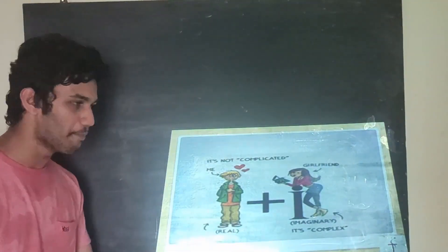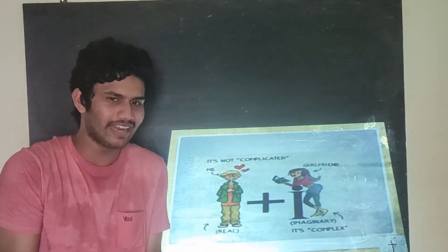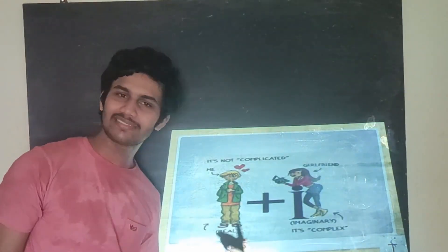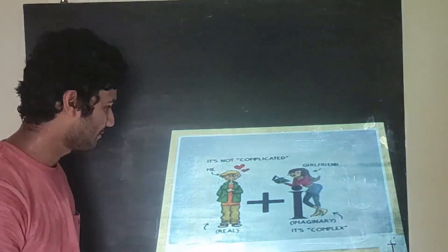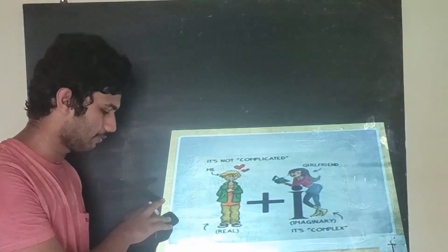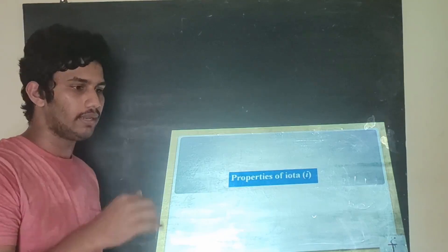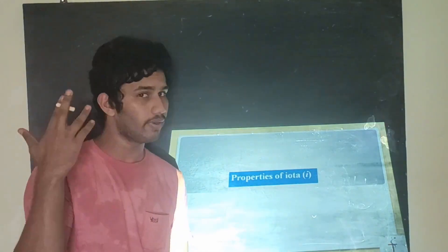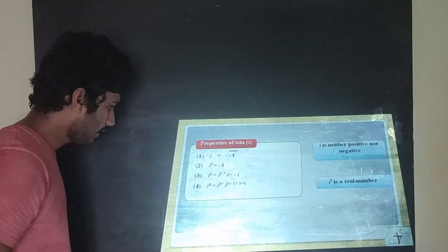Just for fun: think of a real boy who is not in a relationship — he will have an imaginary girl in his mind. When the real boy and the imaginary girl combine together, that becomes a complex relation! Now, properties of iota — very important. Whether it's a board exam or any competitive examination, you will get a question from the properties of iota.